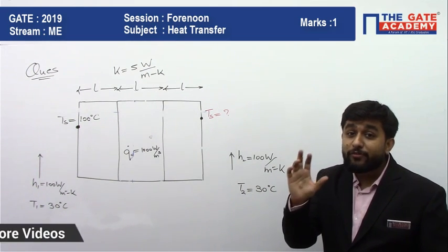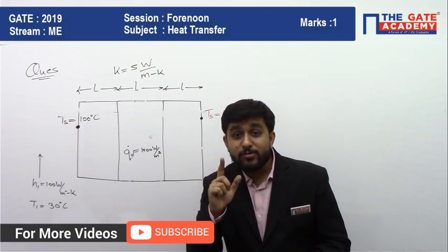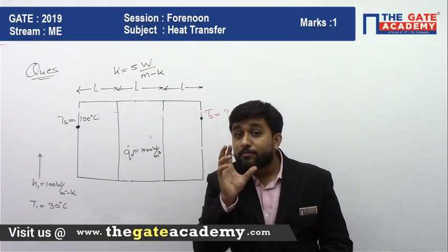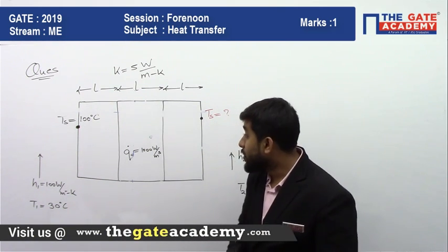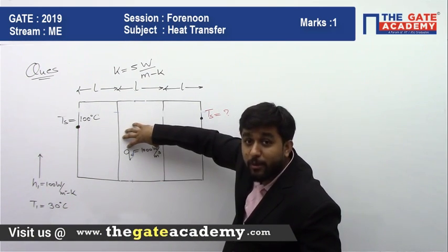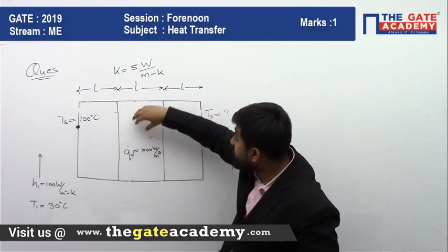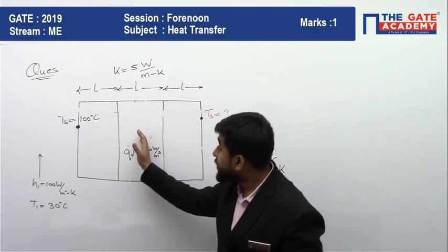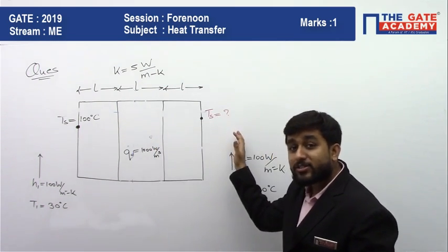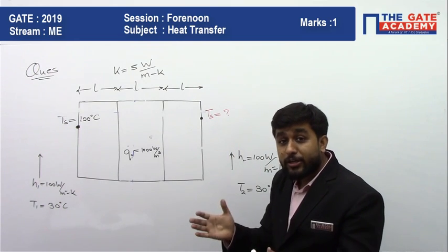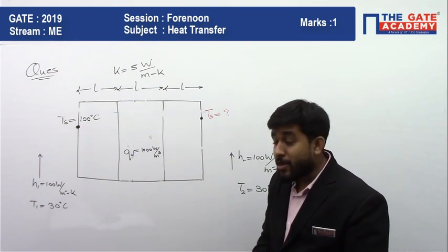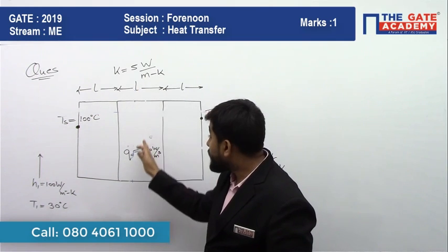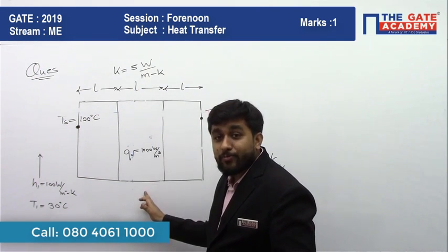In the case of internal heat generation, the maximum temperature region is always formed somewhere in between the wall. So in this case, the maximum temperature will be achieved somewhere in between the wall. Since the left hand side and right hand side conditions for heat transfer are the same, the maximum temperature will be formed at the center only.